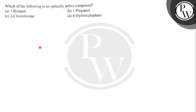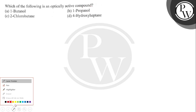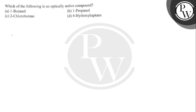Hello dear students. Our question is: which of the following is an optically active compound? We need to find out which compound is optically active. Option A is 1-butanol — this is the structure of 1-butanol.